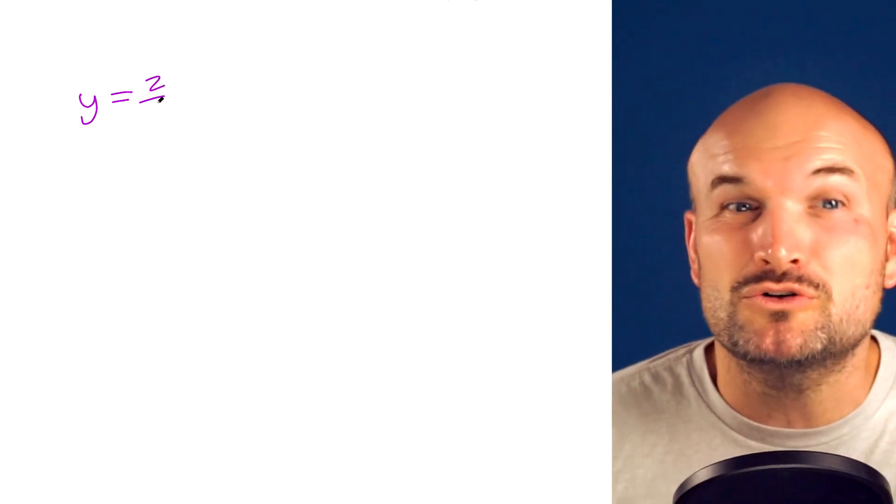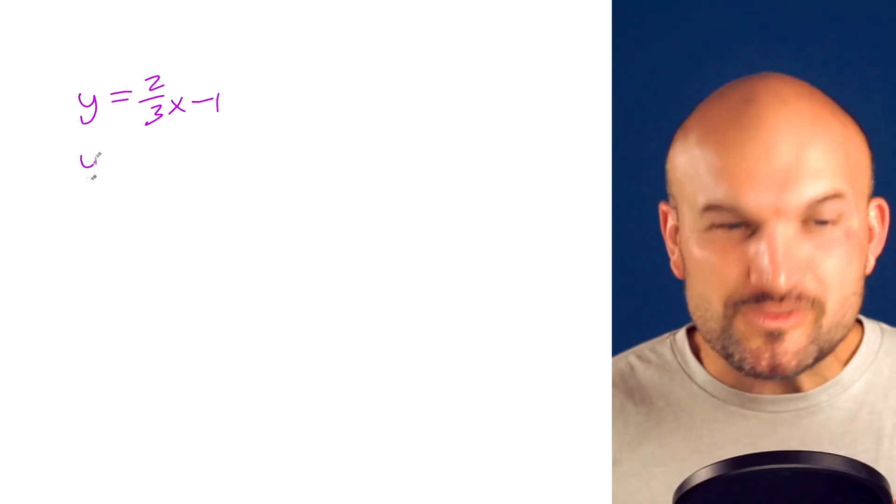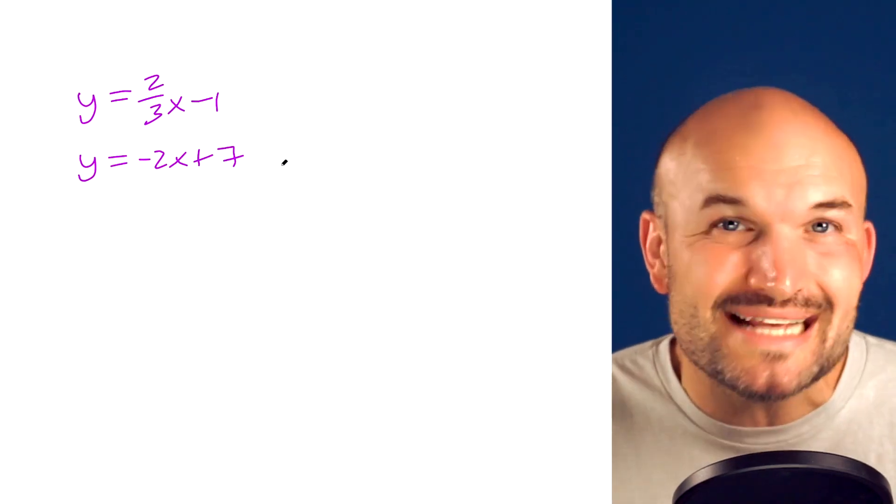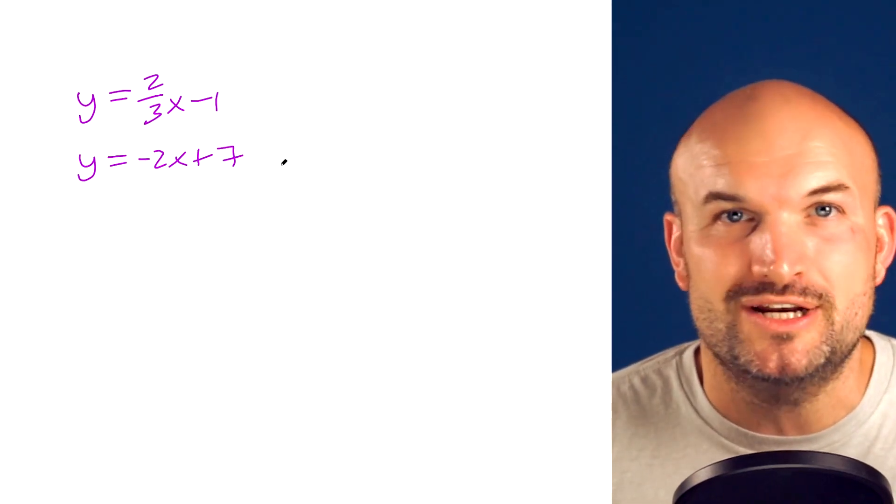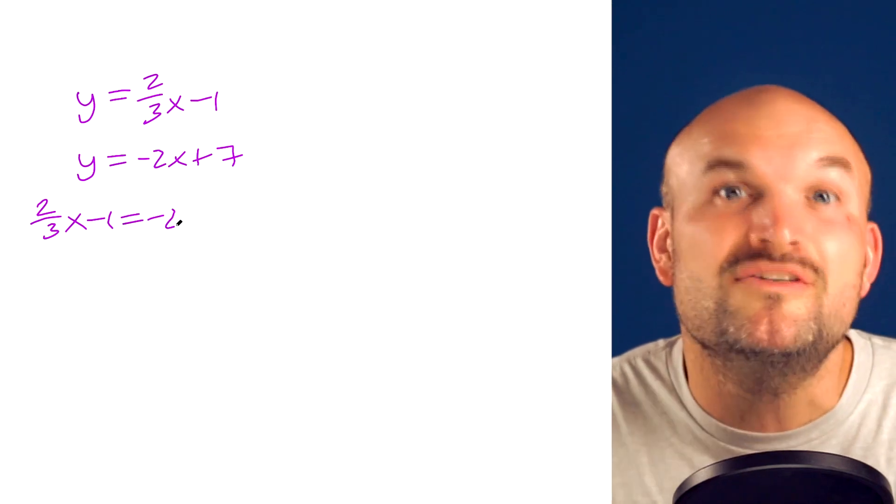So you can see in this example, I have Y equals two thirds X minus one, as well as Y equals negative two X plus seven. This is a great example to be able to use substitution. Set the equations equal to each other and solve for X.